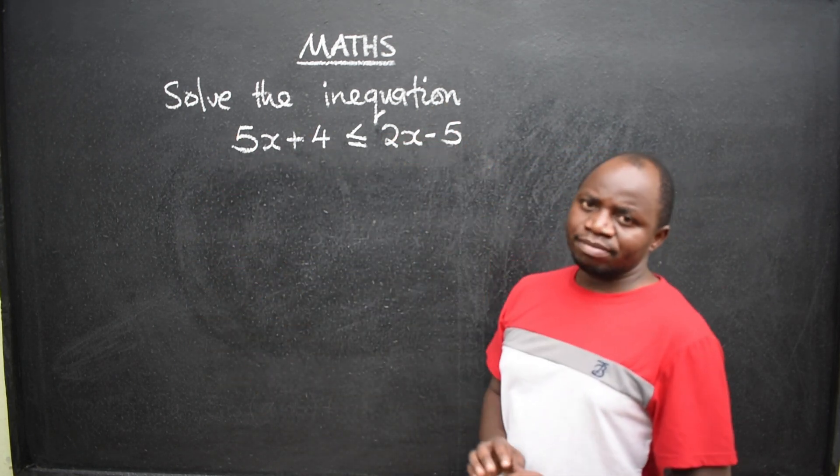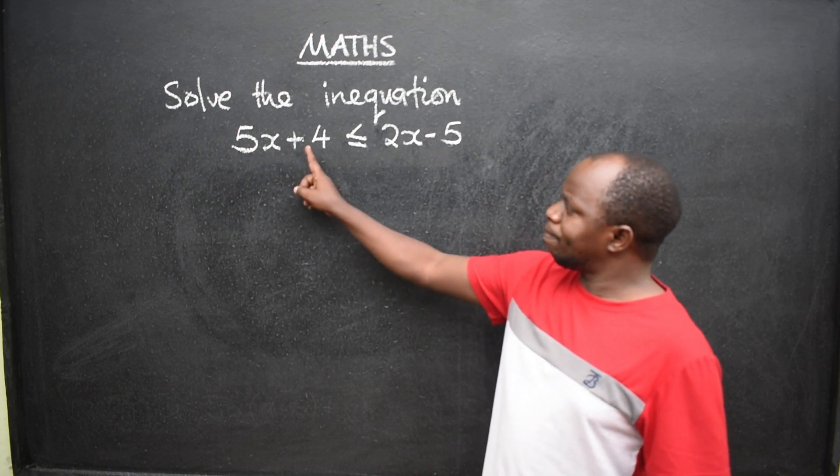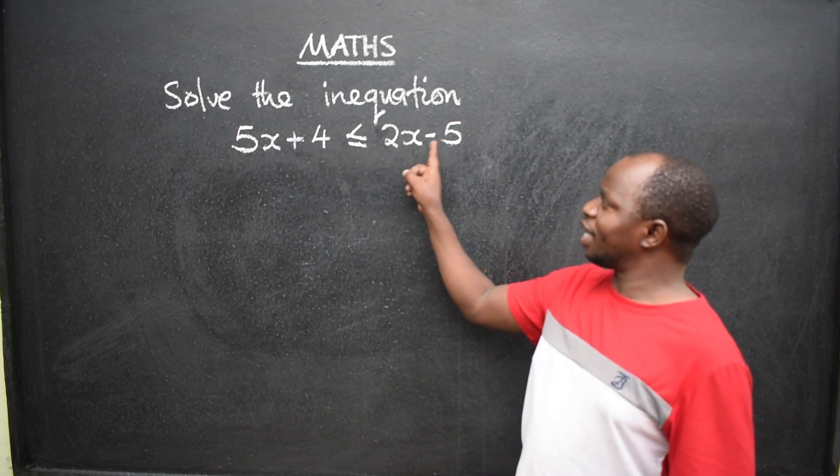Solve the in-equation. Okay, so this is an in-equation: 5x plus 4 less or equal to 2x minus 5.